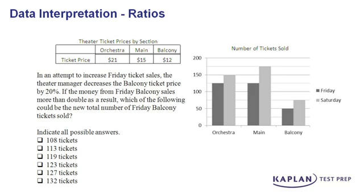Let's be very specific as to what we're solving for first. We want to know which of the following answer choices could be the new total of Friday balcony tickets sold. Our answer choices say indicate all possible answers, meaning there might be more than one possible answer here.